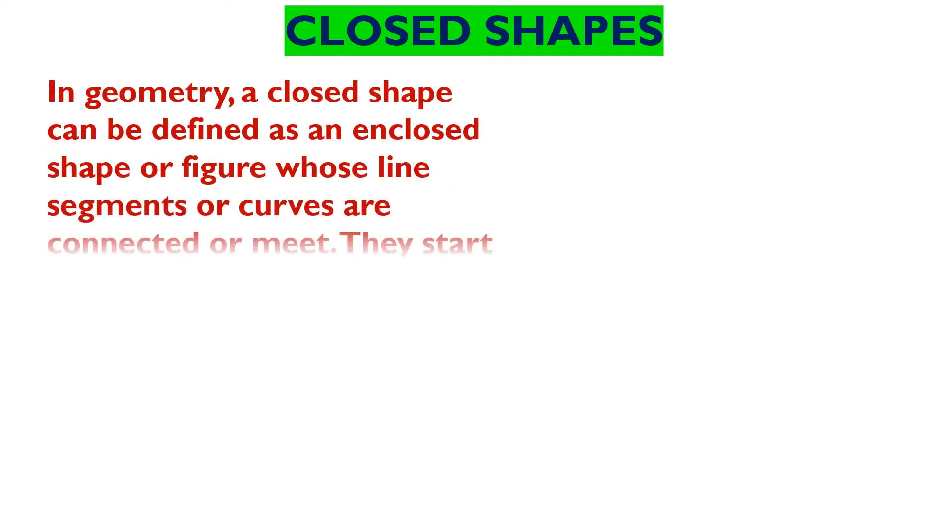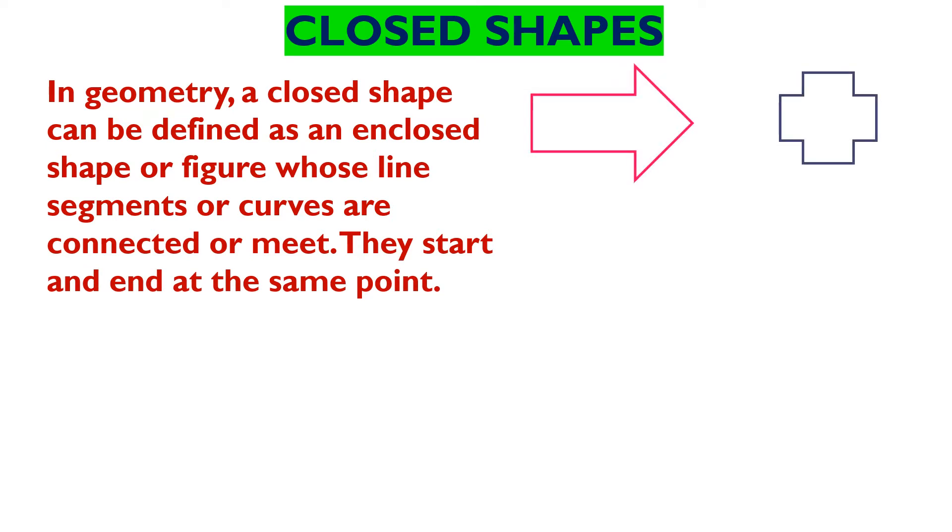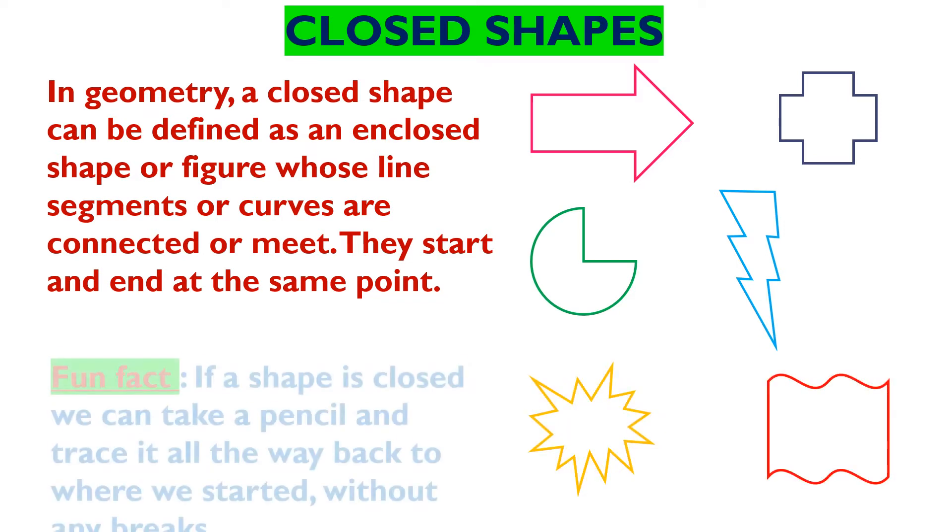Now, closed shapes. In geometry a closed shape can be defined as an enclosed shape or figure whose line segments or curves are connected or meet at a point. They start and end at the same point. Like you can see many figures there. They all are closed shapes.